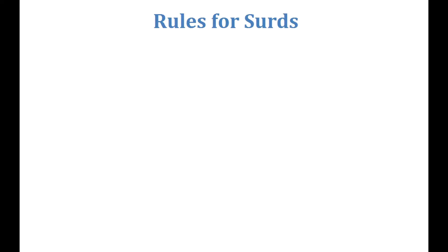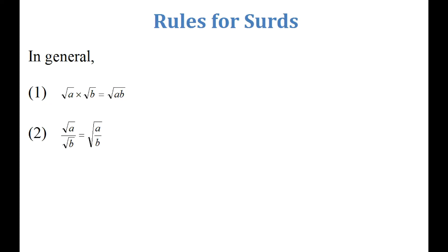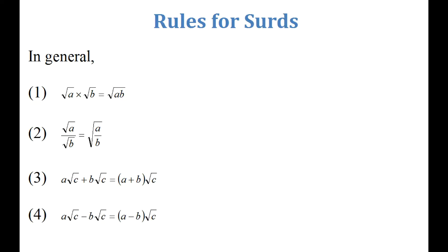Now, rules for surds. The first rule: square root of a times square root of b equals square root of ab. The second rule: square root of a divided by square root of b equals square root of a over b. Third rule: a root c plus b root c equals (a plus b) root c. And the fourth rule: a root c minus b root c equals (a minus b) root c.